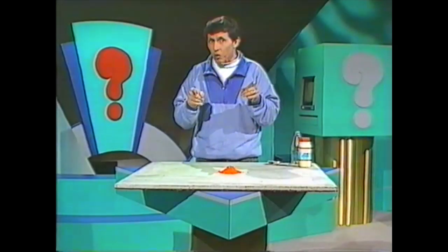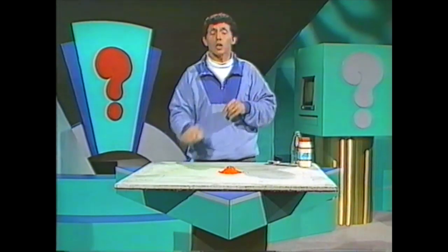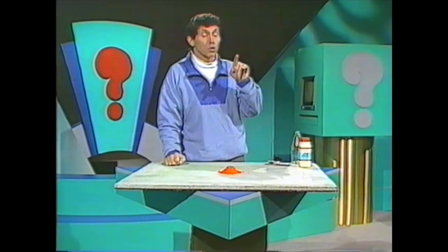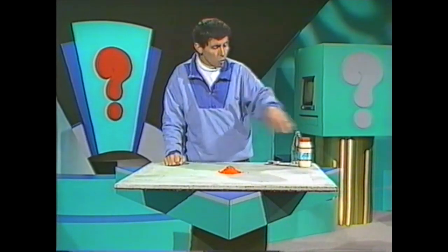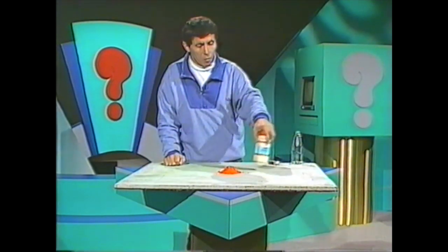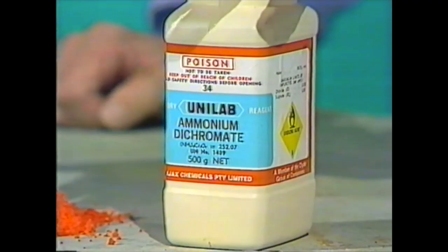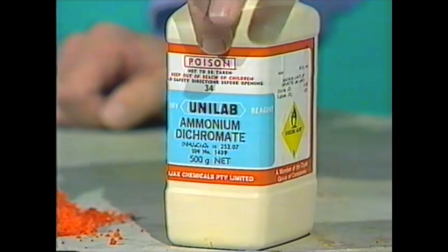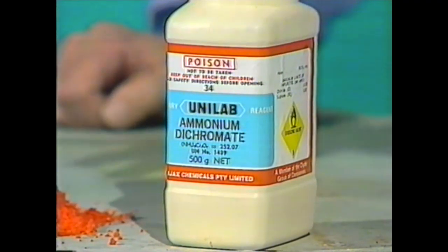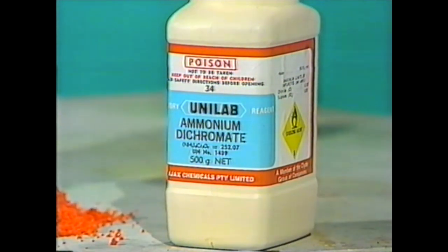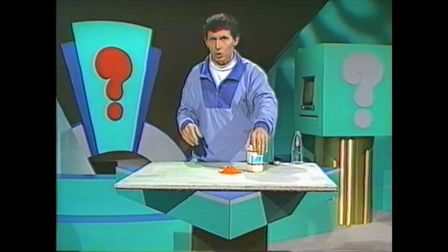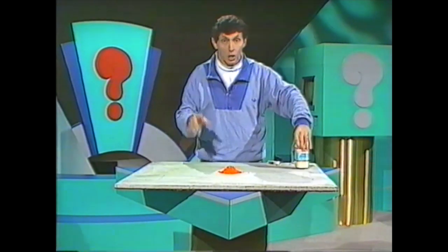Here's another model your science teacher may be able to do at school, using a bright orange chemical called ammonium dichromate. It's poisonous and dangerous, so it's not something you'd do yourself, but your teacher might be able to do it — probably in a special part of the laboratory called a fume cupboard, which takes away any poisonous materials.